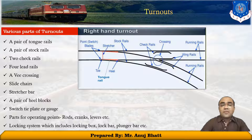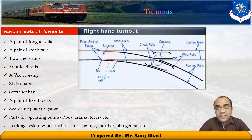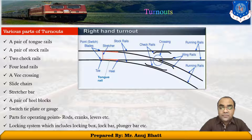Some other parts for operating points include rods, cranks, levers, and a locking system which includes a locking box, lock bar, plunger bar, etc.